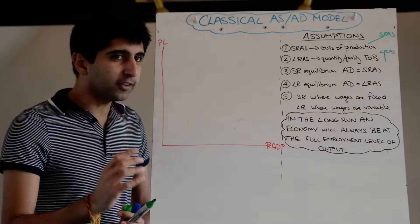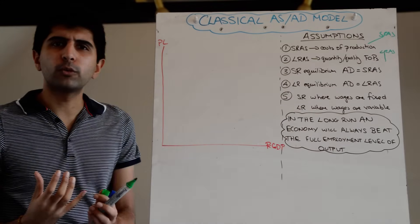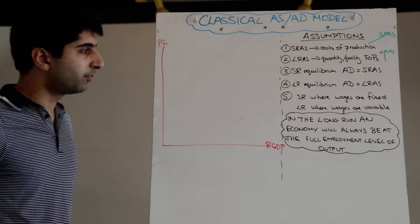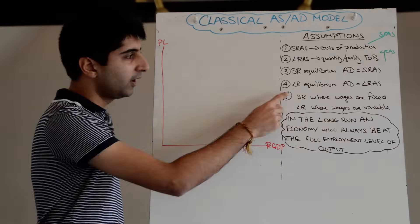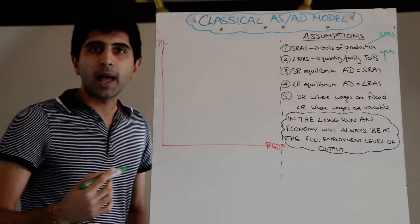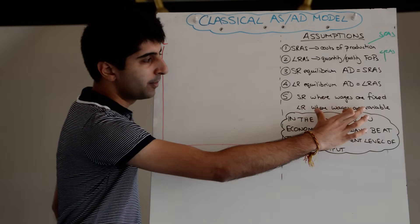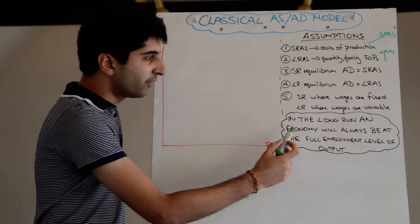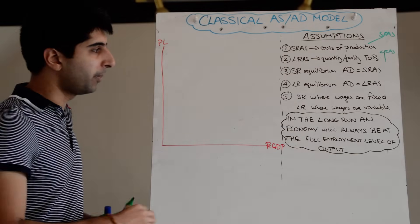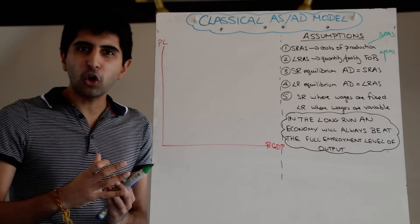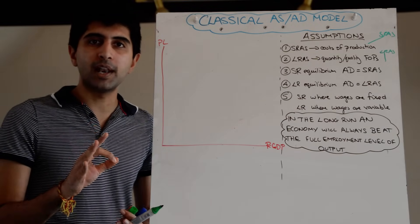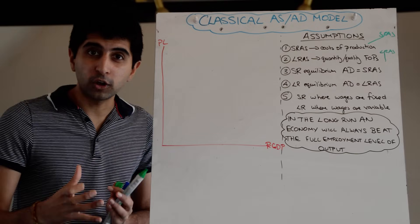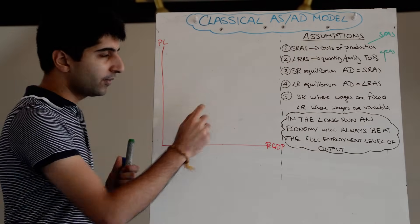In the classical model, the short run is where wages — and more generally, resource prices — are fixed. The long run is where wages are variable. Importantly, no time frames are put on the short run and the long run; we simply know that when wages become variable and workers accept higher or lower wages, we've hit the long run. The key conclusion of the model is that in the long run, the economy will always return to full employment on its own, with no need for government intervention.